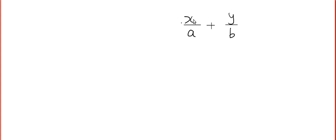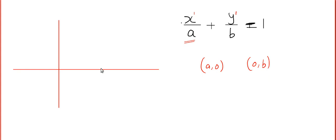Before the next question, let me talk about the double intercept form. If you ever get x/a + y/b = 1: the degree of x and y are both 1, so it is a line. This line cuts the x-axis at (a, 0) and the y-axis at (0, b), which is why it is called the double intercept form. Given two points we can draw a unique line.